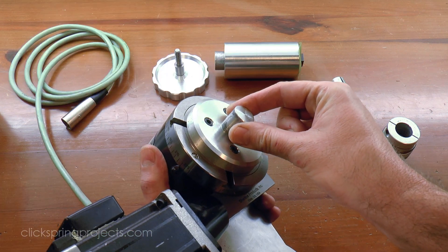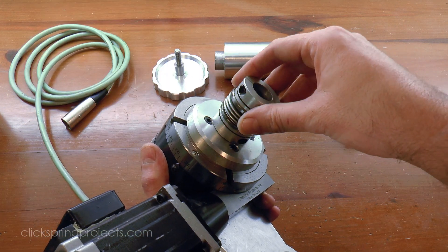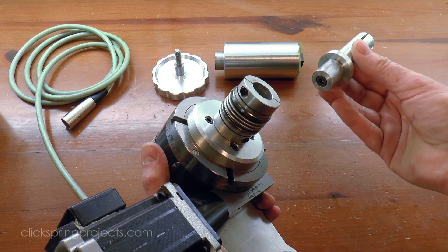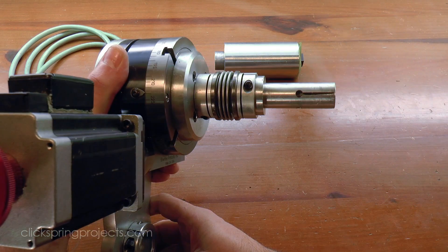I've also made an adapter boss that mounts onto the rotary table, and then I use a bellows coupling to connect it to an expanding mandrel that is itself designed to lock into the rear of the lathe.